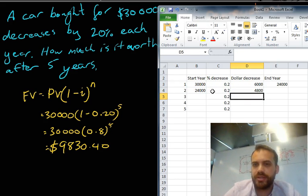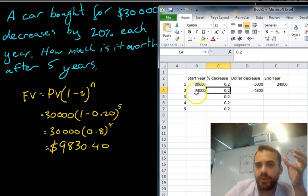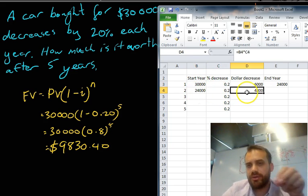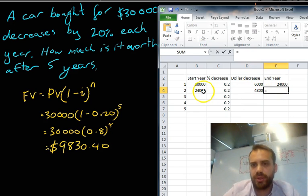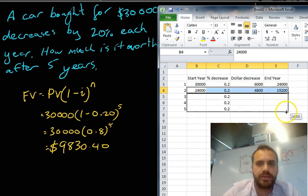The dollar decrease is going to change because it's not 20% of $30,000 anymore. It's 20% of $24,000. So, the dollar decrease is less. And we can put equals this minus this. Yeah. Now, I can drag that down now because all those formulas are going to stay the same.